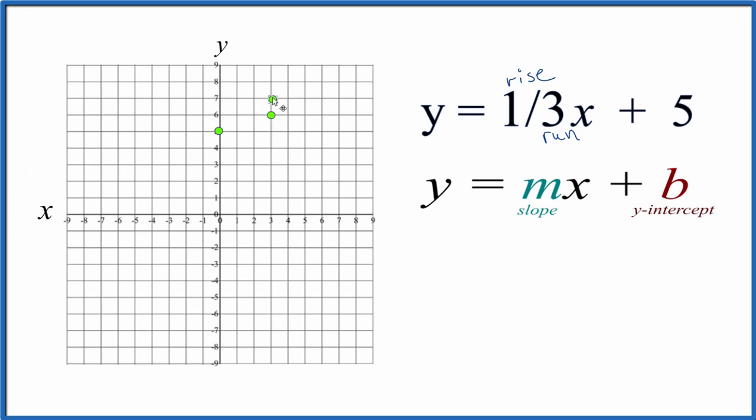From that point, we rise 1 and we go over 1, 2, 3. There's 3 points. We could do our line. We could also add more points. We could go down 1 and then over 3 in the opposite direction like that.